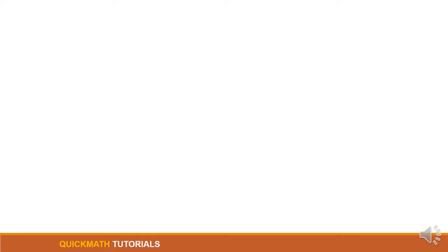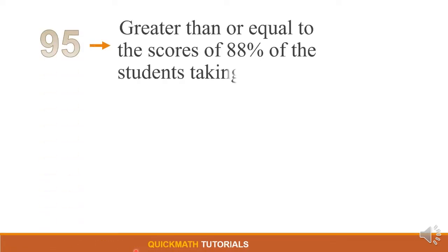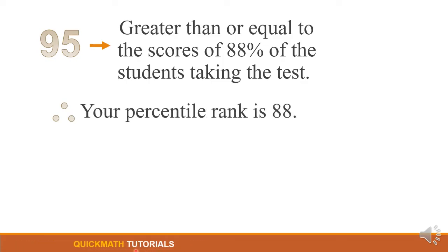For example, if you received a score of 95 on a mathematics test and this score was greater than or equal to the score of 88 percent of the students taking the test, therefore we can say that your percentile rank is 88. So how will we get the 88 percent?